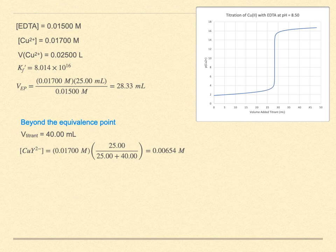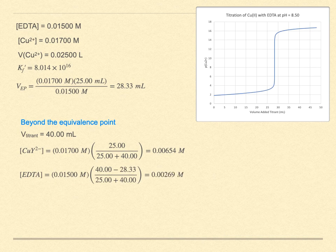We also figure out a dilution for the excess titrant. Now watch this. You are talking about the dilution of the volume in excess of the equivalence point. And you are talking about the titrant's original concentration. The concentration of the total free EDTA is 0.00269 molar.